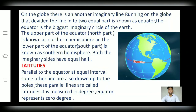Friends, there are some other imaginary lines which pass on the globe. What we see in the figure? There is a red line lying on the globe. This line actually divides the globe into two equal parts. This dividing line is basically known as equator. The equator is the biggest imaginary circle on the earth. The upper part cut by the equator is known as north hemisphere and the lower part is known as south hemisphere. The equator cuts both parts in equal half.